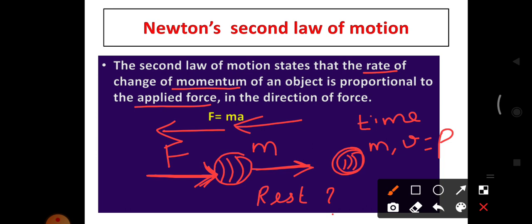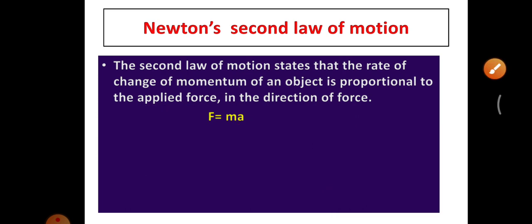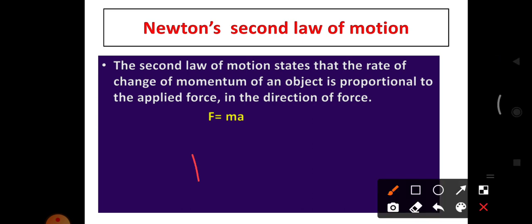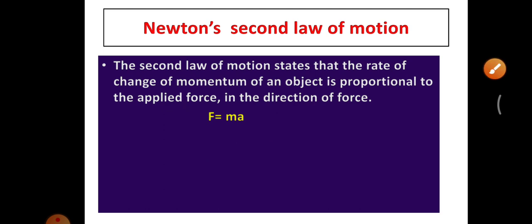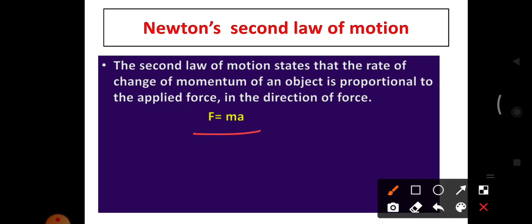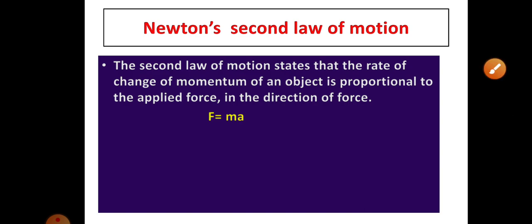From this we can state that the rate of change of momentum of an object is proportional to the applied force. If the force is more, the momentum is also more because it is directly proportional. The direction of force and momentum are in the same direction. The equation for Newton's Second Law of Motion is F = MA, and we will see how to derive this equation next.